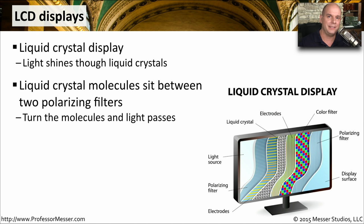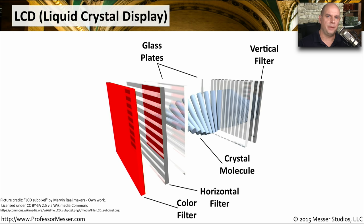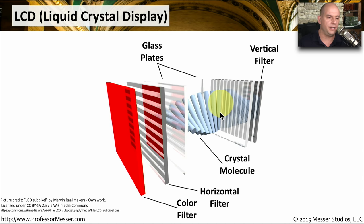There's a lot of activity happening on the inside of your LCD display. To see light through these liquid crystals, you need to shine light from the backside, so there is usually some type of backlight behind the screen. When the liquid crystals are twisted, that light is able to shine through. Here's a microscopic view: a backlight on the right shines light through the LCD monitor, passing through vertical and horizontal filters and a color filter to produce the image we see.